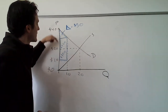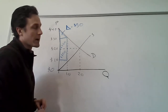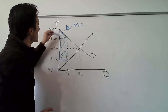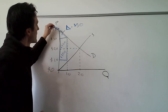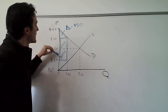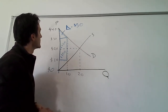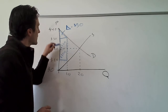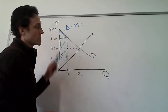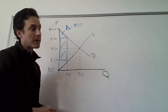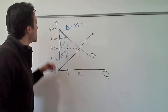That means consumer surplus is going to be this trapezoid shape, which we can break up into a triangle next to the demand curve and two rectangles — which actually look like squares. Adding those up gives us the entire trapezoid representing consumer surplus.